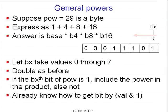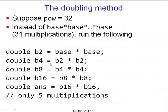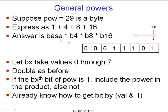Imagine 29 written as a byte: 00011101. We step up from the least significant bit — keep doubling as before, and if the bx-th bit of pow is 1, include that power in the product; otherwise do not. For example, b4 can be computed on the way but we only multiply it into the answer if the corresponding bit is 1.